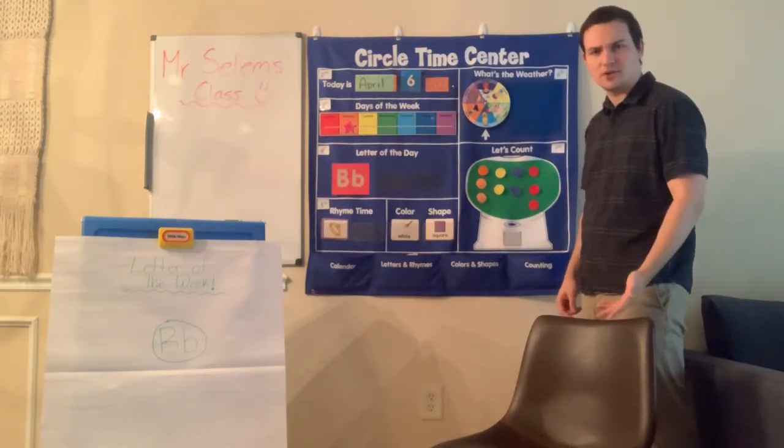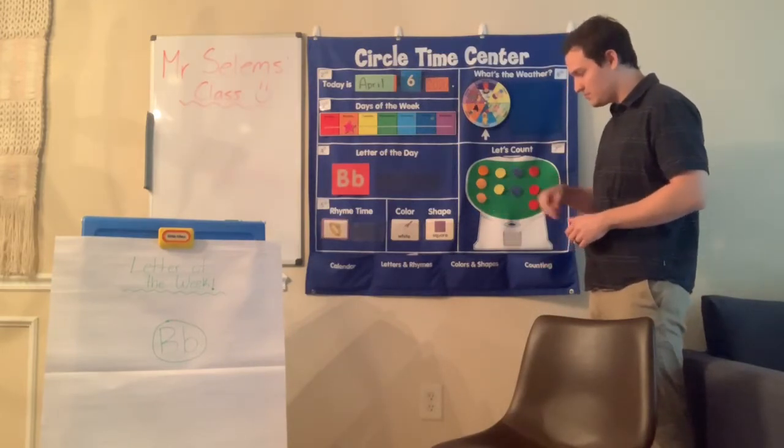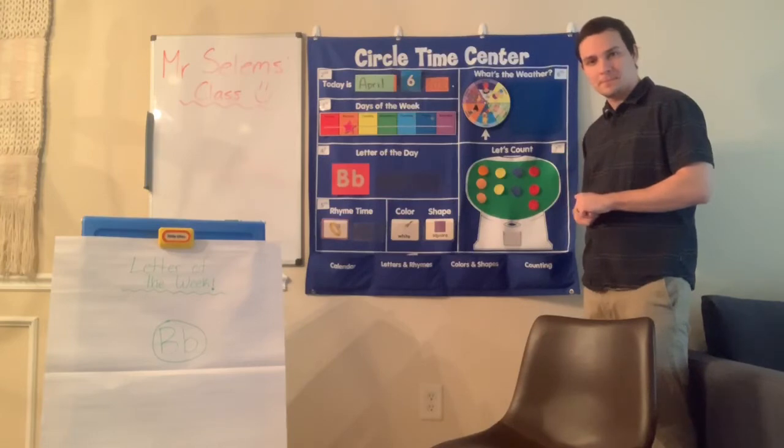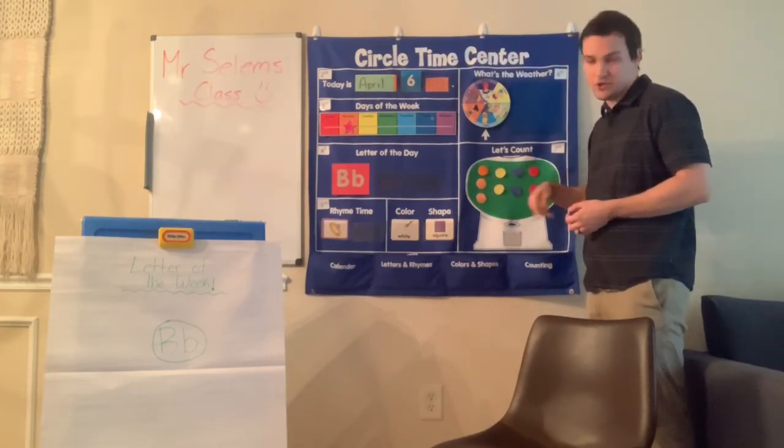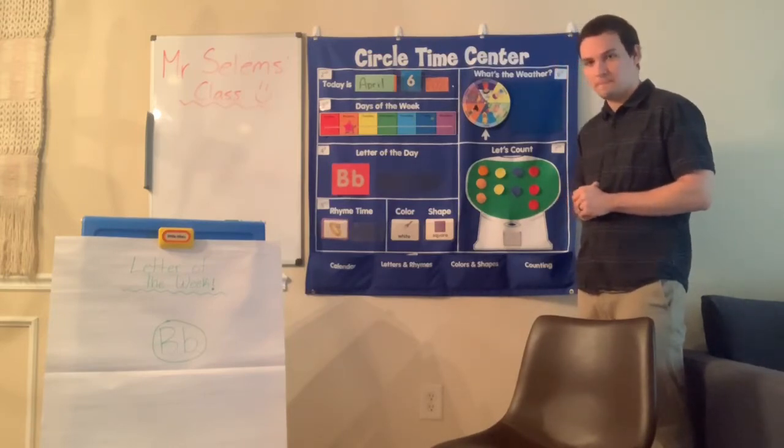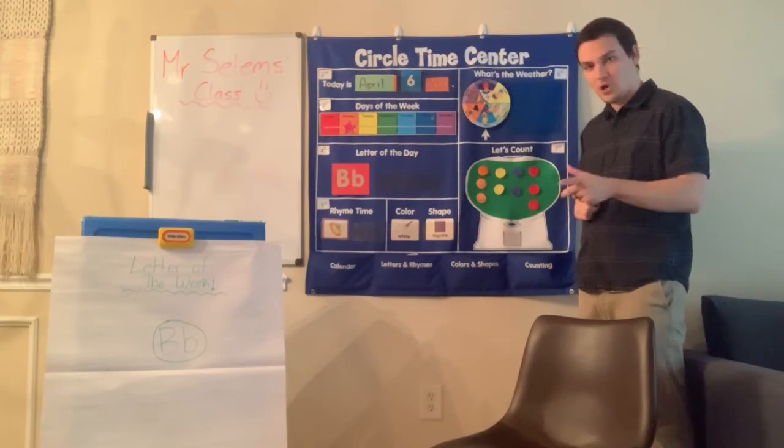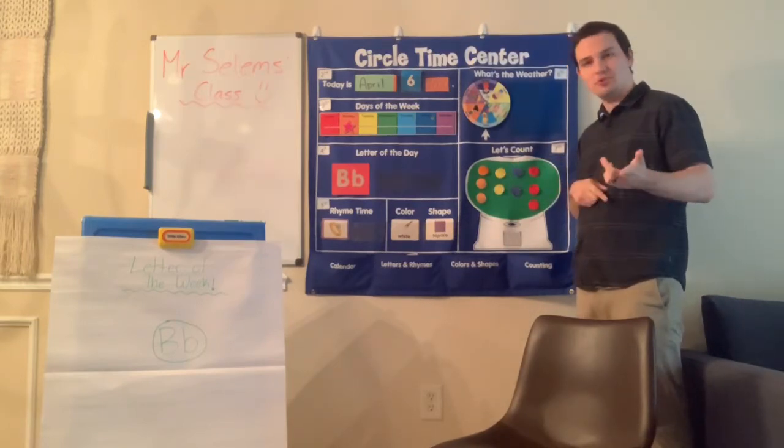Now let's count each color. I need your help. So how many orange gumballs do you see? Perfect. One, two, three orange gumballs. Now how many yellow gumballs do you see? Awesome, just two. One, two.